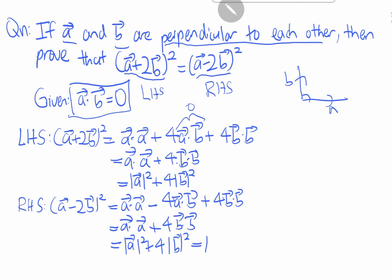which is equal to the left hand side. Therefore, this equals to this. A plus 2b square equals to a minus 2b square.